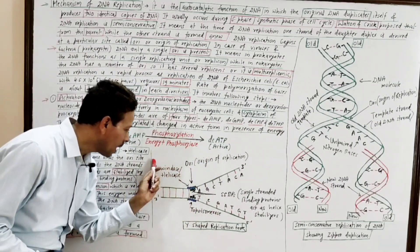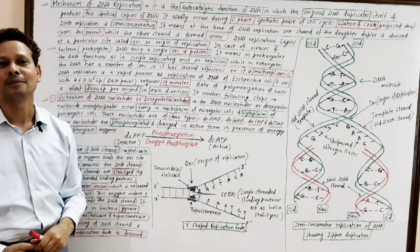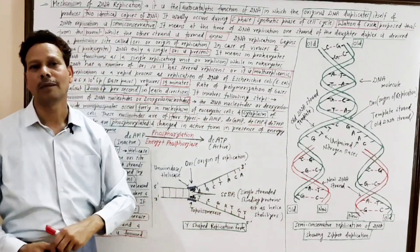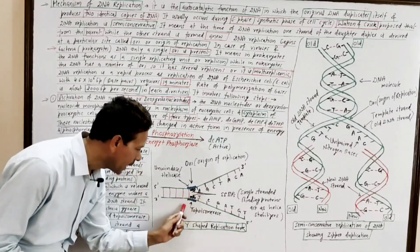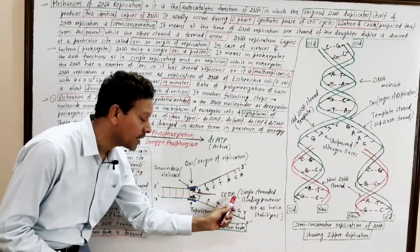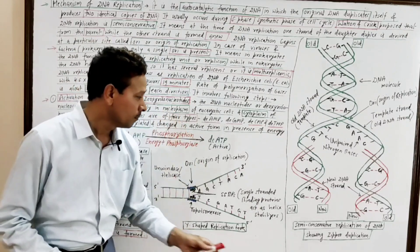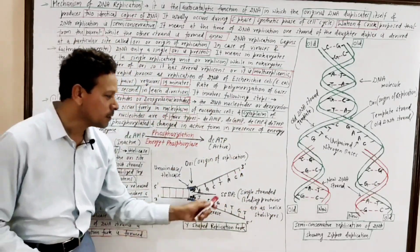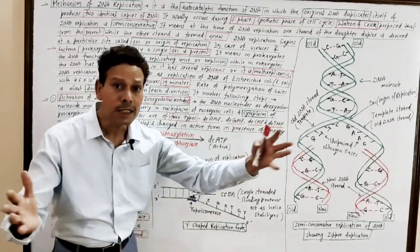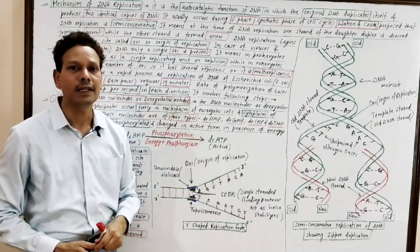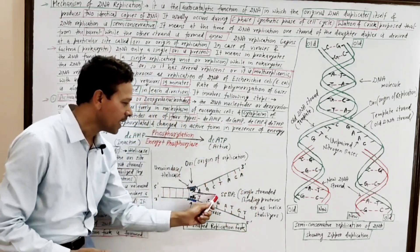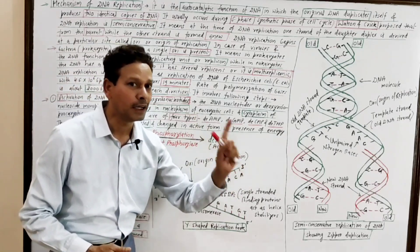Unwinding of the DNA helix is caused by the unwinding enzyme, or helicase. Due to this unwinding and uncoiling, tension develops, and that tension is released by the enzyme topoisomerase. The separated single strands are then stabilized by SSBPs — single-stranded binding proteins — which act as helix stabilizers.